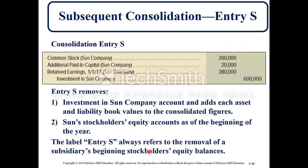For consolidation entry S: common stock, additional paid-in capital, and retained earnings are all debited, and investment in Sun Company is credited. Entry S removes the investment in Sun Company account and adds each asset and liability book value to the consolidated figures — Sun's stockholders equity accounts as of the beginning of the year. The label S always refers to removal of a subsidiary's beginning stockholders equity balance.